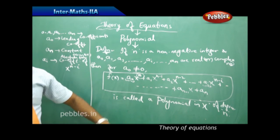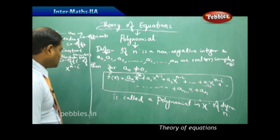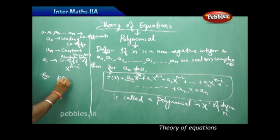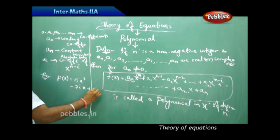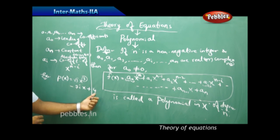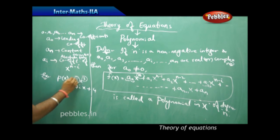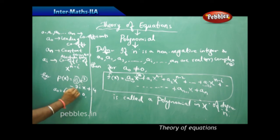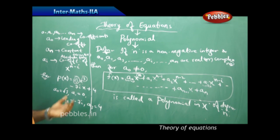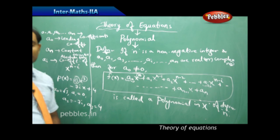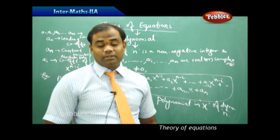For example, if p(x) = √3·x³ − 7ix + 4, this is clearly a polynomial of degree 3 in x. The coefficients are complex (which is allowed). Here a₀ = √3, a₁ = 0 (no x² term), a₂ = −7i, and a₃ = 4. This is a polynomial in x of degree 3, illustrating how coefficients are derived from the given polynomial.